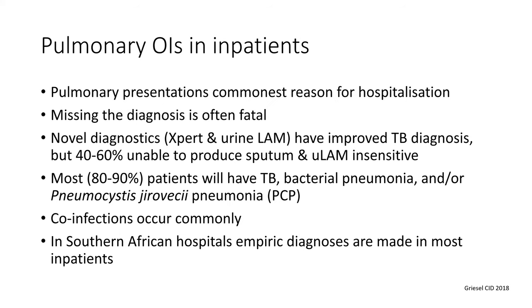Let's kick off with primary opportunistic infections. They are the commonest reason for hospitalization among HIV-positive people, and if you get the diagnosis wrong there's a good chance the patient will die. There have been novel diagnostics in TB — notably Xpert and urine LAM — but a high percentage of people can't produce sputum, and urine LAM is not very sensitive. So there can be quite a lot of people whose LAM is negative who can't produce sputum, who do have TB, and you're left scratching your head.